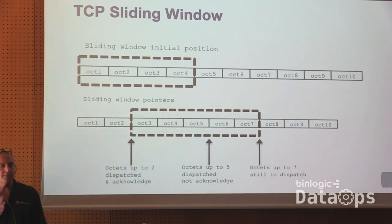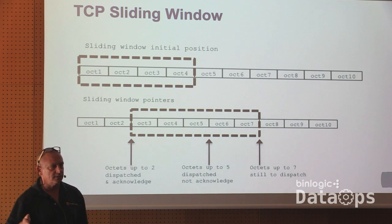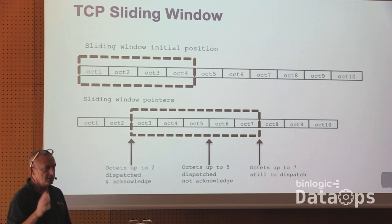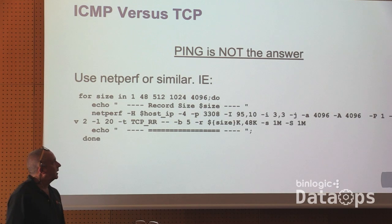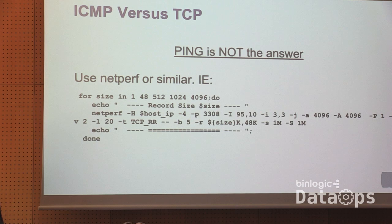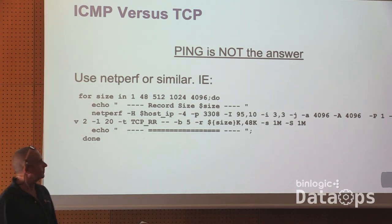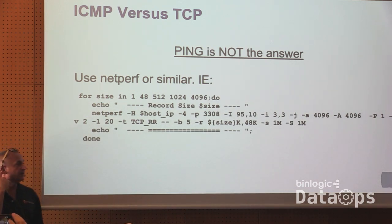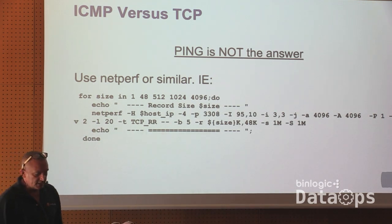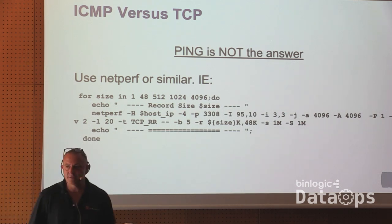Think about this: you have a database with a lot of transactions per second, a lot of data going back and forth. This kind of TCP behavior in a DR solution is killing you. So ping is not the answer. If you want to test properly, I like Netperf with several settings — it gives good results in terms of analysis. My colleagues at Percona have started to use it almost as a standard.